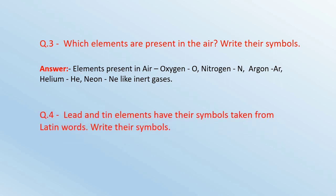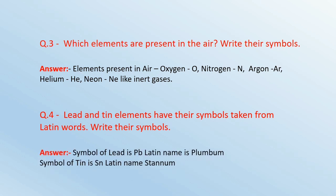Question number 4: Lead and Tin elements have their symbols taken from Latin words. Write their symbols. And the answer is: Symbol of Lead is Pb and the Latin name is Plumbum. Symbol of Tin is Sn and the Latin name is Stannum.